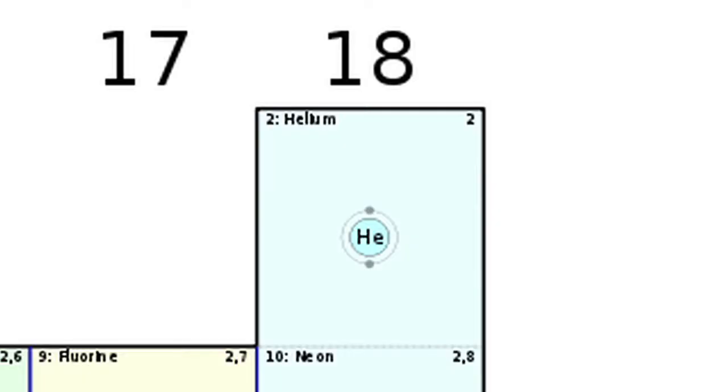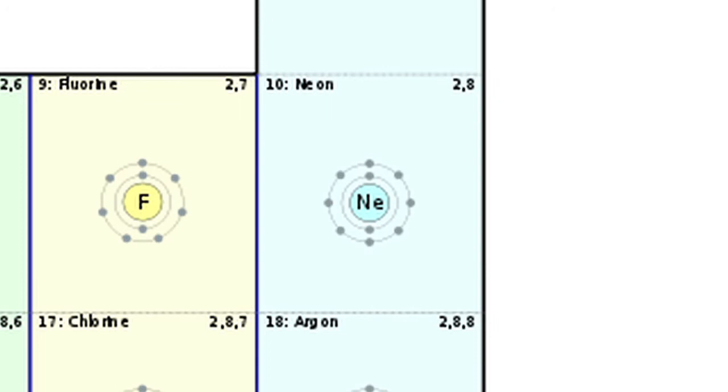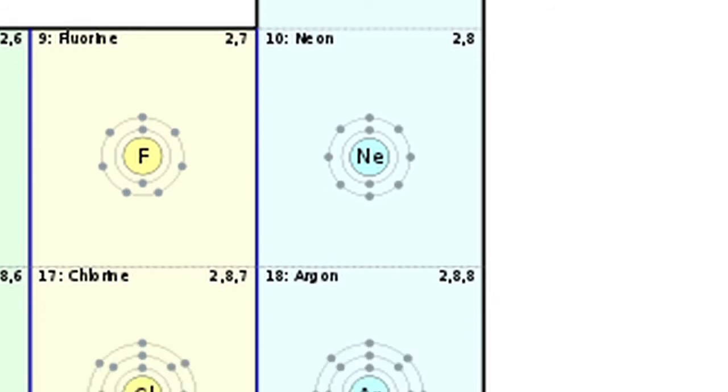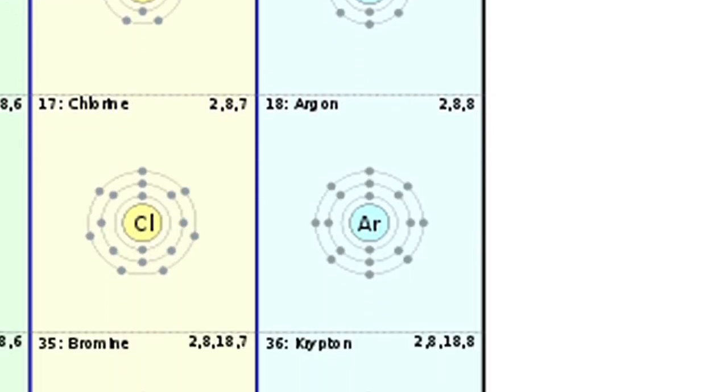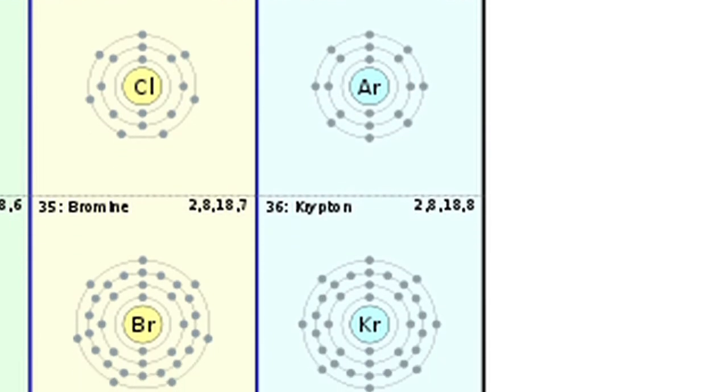The first energy level needs two electrons to be full. Energy levels two and three like to have eight electrons to be full. You will learn about what happens with four or more energy levels later.